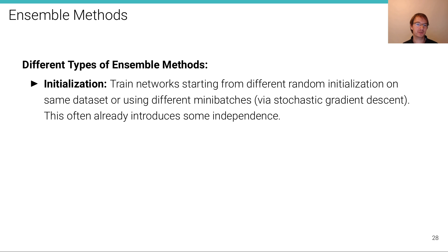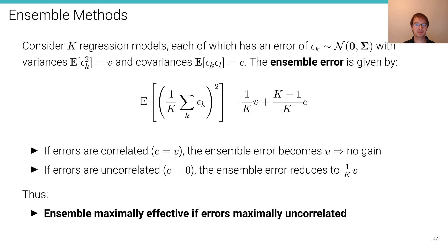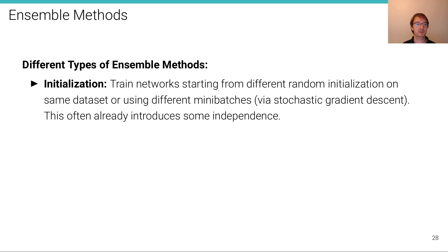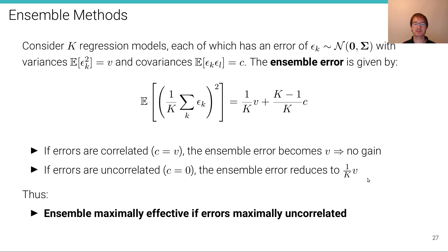Now, how can we construct these ensembles? Well, there's multiple strategies. The simplest is to simply use different initializations or different stochasticity during training. So we train networks starting from different random initialization on the same data set or using a different order of the mini batches in stochastic gradient descent. And even for very simple, this often already introduces some independence. And that independence can be directly exploited by this ensemble technique. As soon as we start to introduce some independence, even if it's not that much independence, we're not going to get this huge gain here, we're getting some gain.